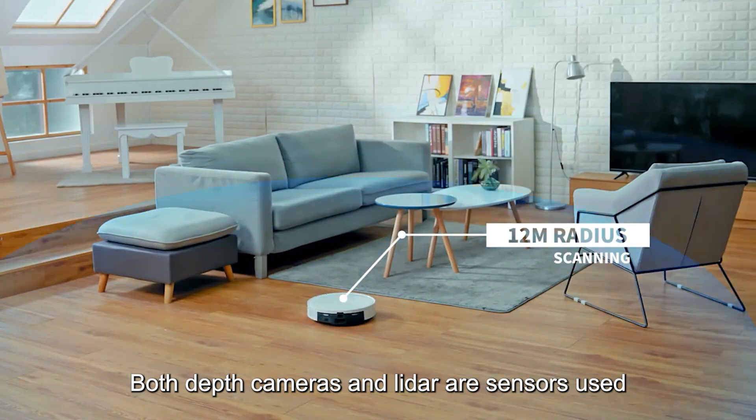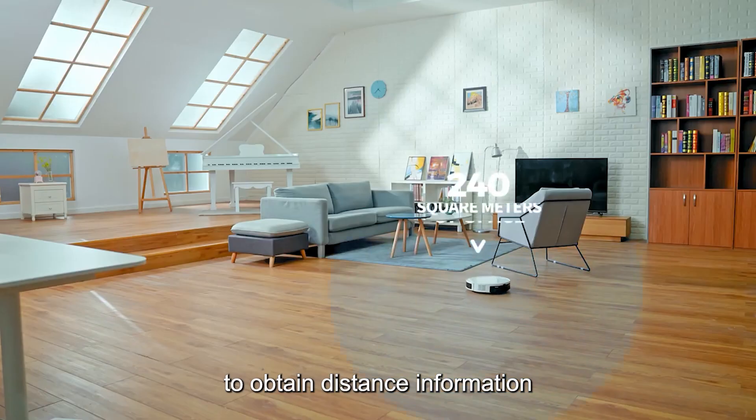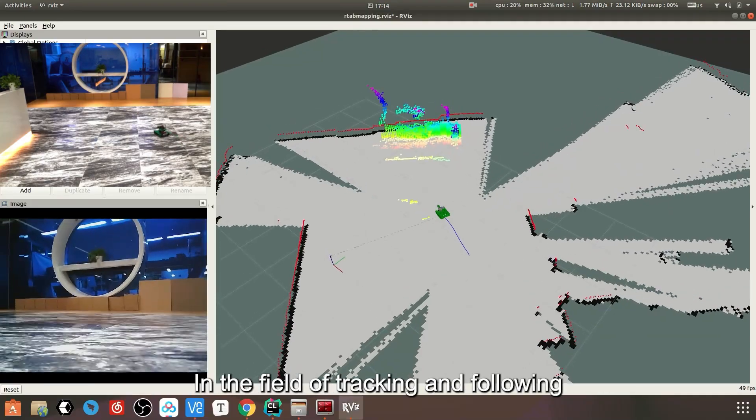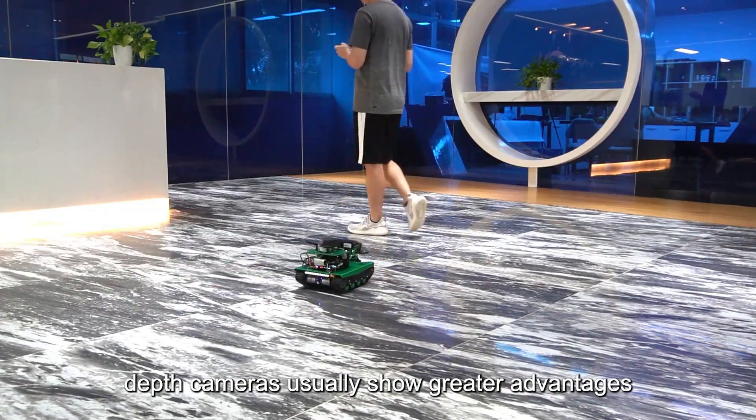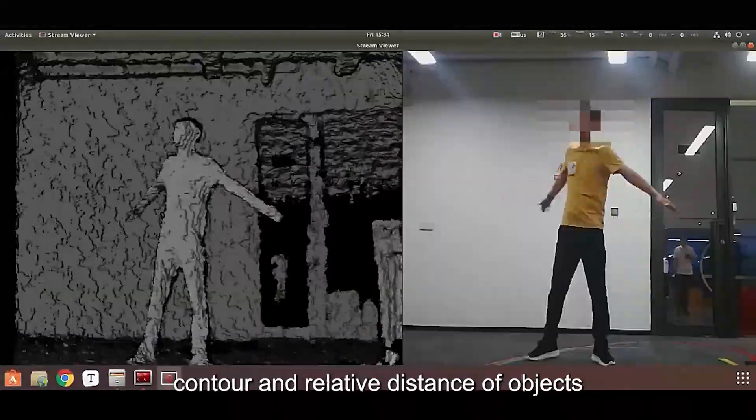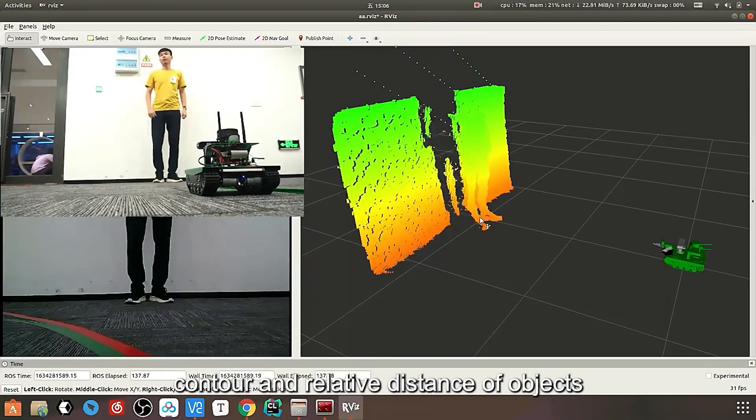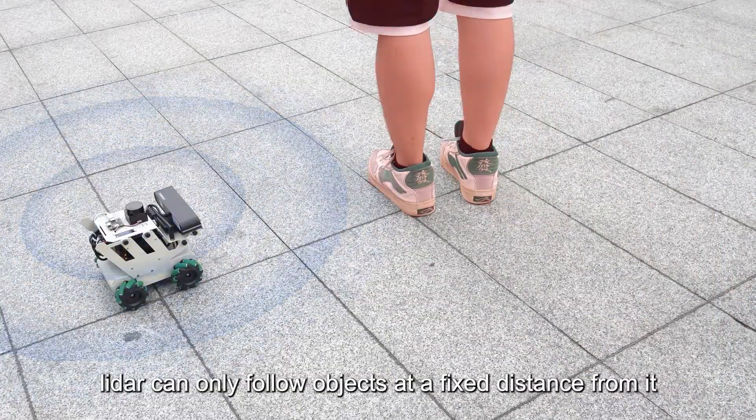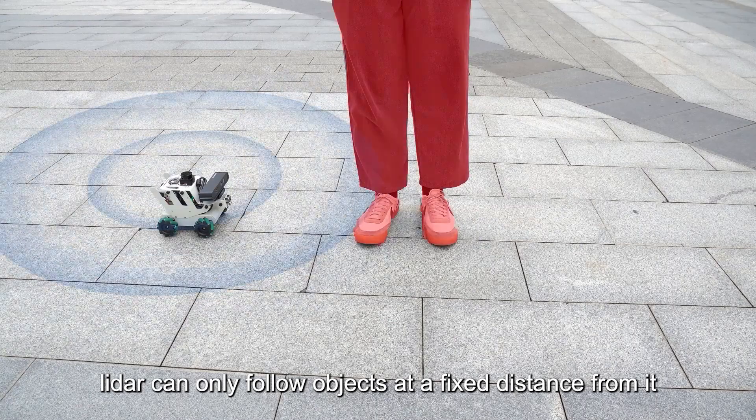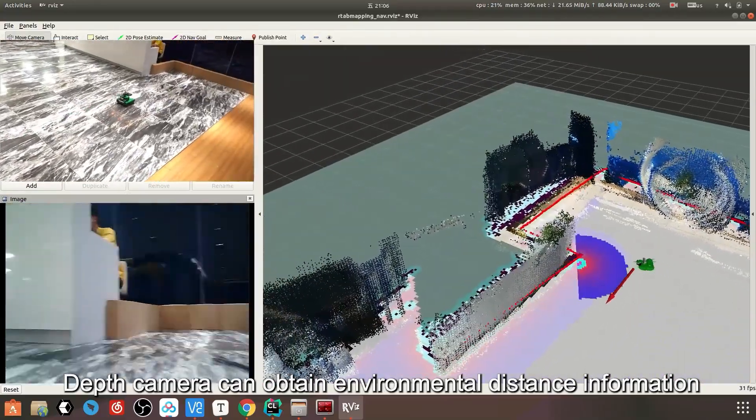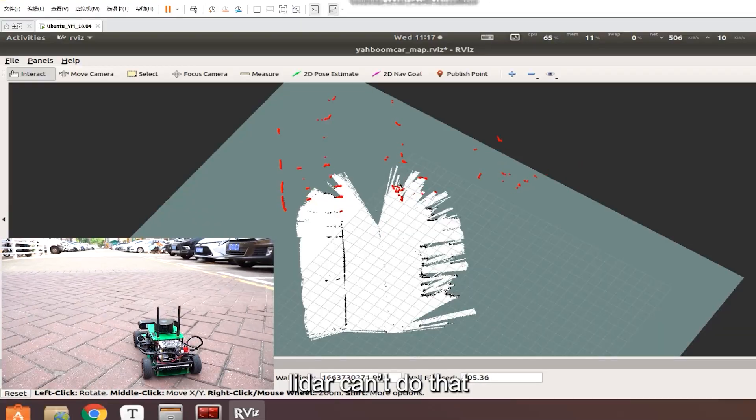Both depth cameras and LiDAR are sensors used to obtain distance information. What is the difference between depth cameras and LiDAR? In the field of tracking and following, depth cameras usually show greater advantages because they can capture the shape, contour, and relative distance of objects, thereby achieving more accurate tracking and following of targets. In contrast, LiDAR can only follow objects at a fixed distance and cannot track specific objects. Depth cameras can obtain environmental distance information. LiDAR can't do that.